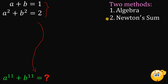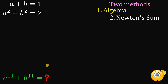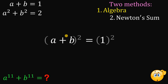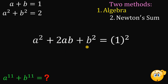Let's begin with the first method: solving the value of a raised to 11 plus b raised to 11 using algebra. First, let's take the equation a plus b equals 1 and square both sides. When we expand a plus b raised to the power of 2, we get a squared plus 2ab plus b squared, and 1 raised to the power of 2 is just 1.